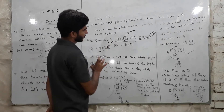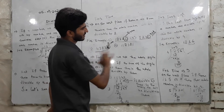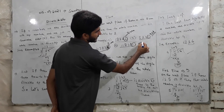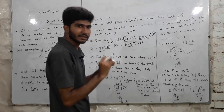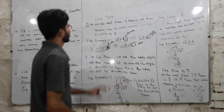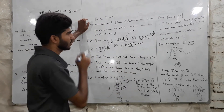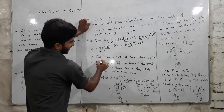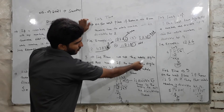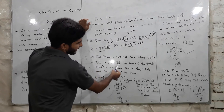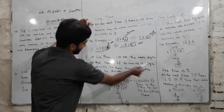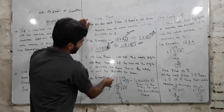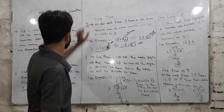For divisibility by 3, we add all the digits of the whole number. If the sum of the digits is divisible by 3, then the whole number will be divisible by 3.